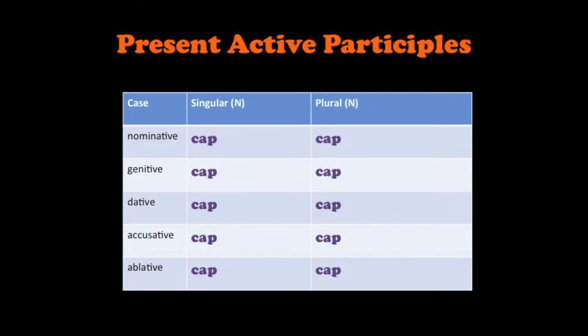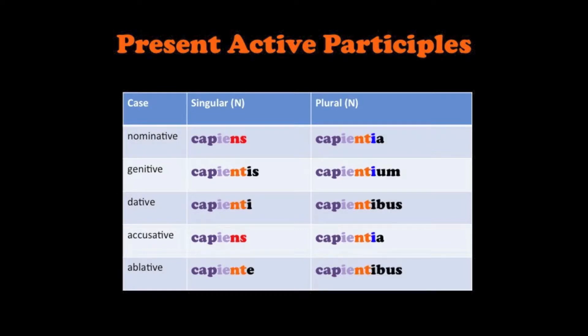Let's look at another verb. Say we take the verb capio, capere, which is a third conjugation IO. The root is cap; the glue is IE. This time let's add the neuter participle endings. We would have: capiens, capientes, capienti, capiens, capiente, capientia, capientium, capientibus, capientia, capientibus.